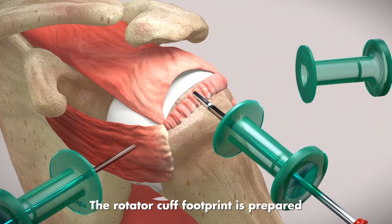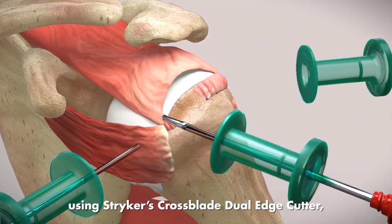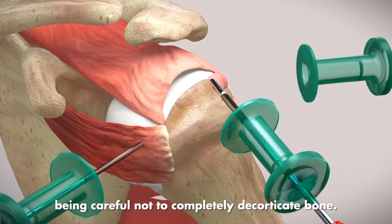The rotator cuff footprint is prepared using Stryker's cross-blade dual-edge cutter, being careful not to completely decorticate bone.